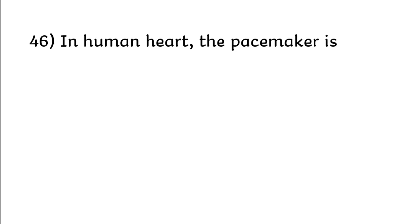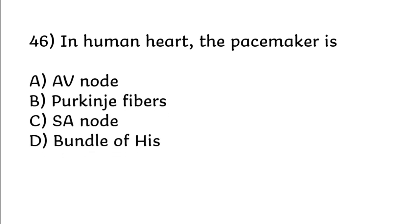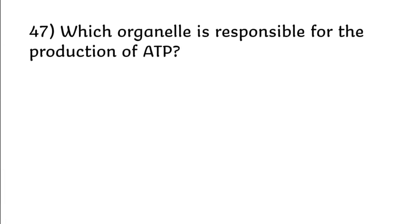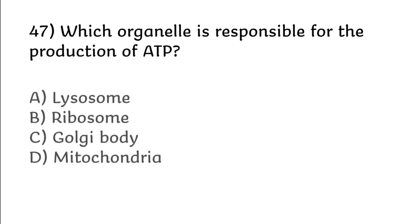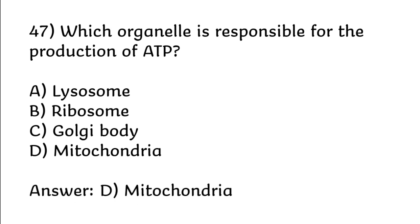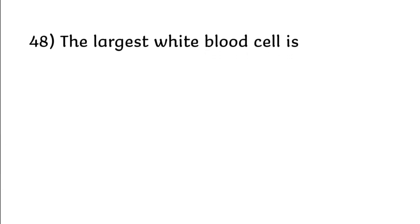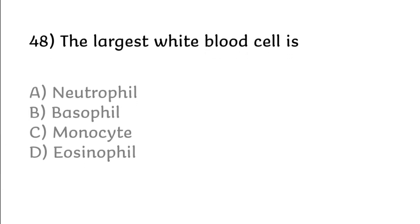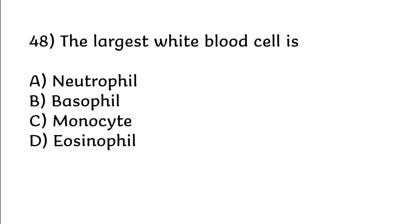In the human heart, the pacemaker is: AV node, Purkinje fibers, SA node, bundle of His. Correct answer is option C: SA node. Which organelle is responsible for the production of ATP? Options: lysosome, ribosome, Golgi body, mitochondria. Correct answer is option D: mitochondria. The largest white blood cell is: neutrophil, basophil, monocyte, eosinophil. Correct answer is option C: monocyte.